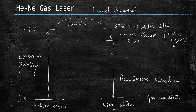These two levels — in helium and neon — are roughly at the same energy, so energy transfer is efficient. These are the metastable states. The population inversion achieved leads to stimulated emission, producing radiation of 6328 Å between the two relevant neon energy levels. This wavelength can be calculated from the difference of those energy levels.